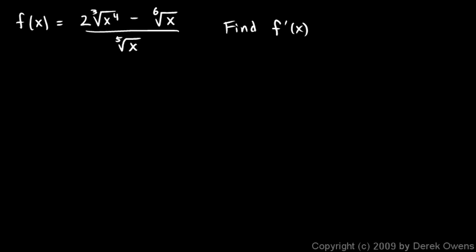Okay, here's a derivative problem that involves exponents and radicals, and also a quotient. We're given f of x is 2 times the cube root of x to the 4th minus the 6th root of x divided by the 5th root of x. And we're told to find f prime, or find the derivative.